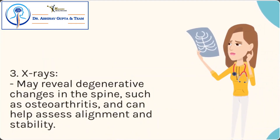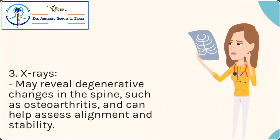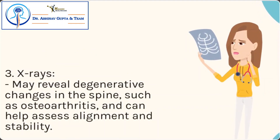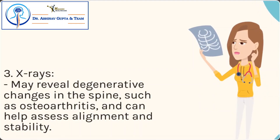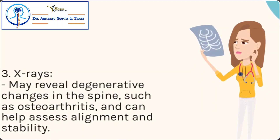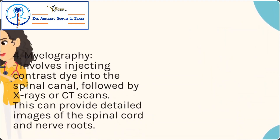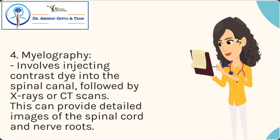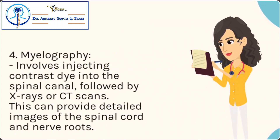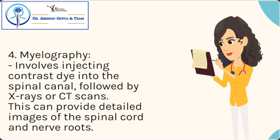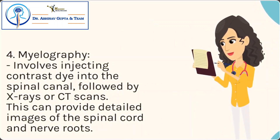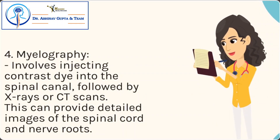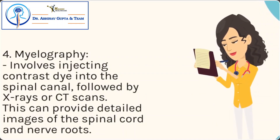X-rays may reveal degenerative changes in the spine such as osteoarthritis, and can help assess alignment and stability. Myelography involves injecting contrast dye into the spinal canal followed by X-rays or CT scans, providing detailed images of the spinal cord and nerve roots.